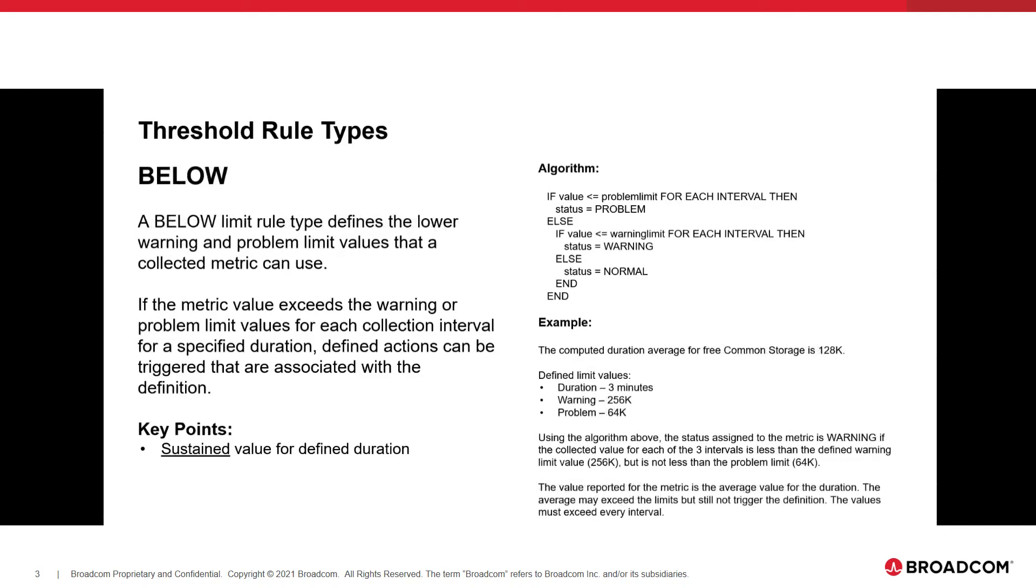Same thing applies to the below rule. For each and every collection interval specified based on duration, the number that we found or monitored in each interval must be below, and it must be below in a sustained manner. So when you're collecting that, in this case, the common free storage, it's 128 over the last three minutes. If in each and every case in the last three minutes it was evaluated and it was below the defined limits, it would then be triggered.